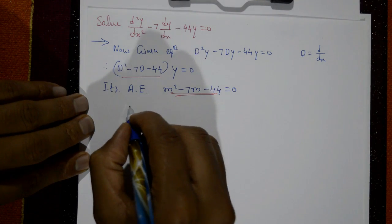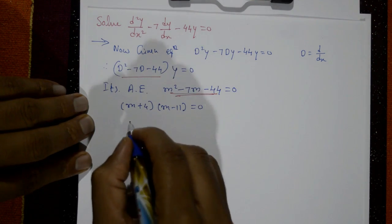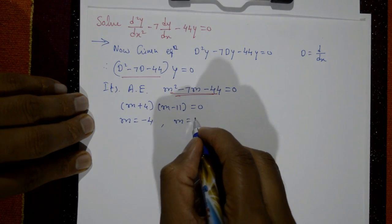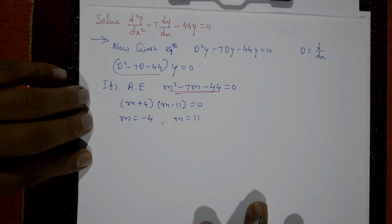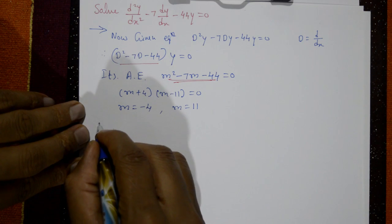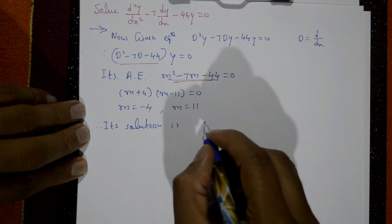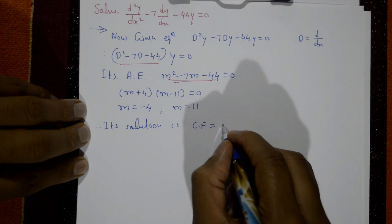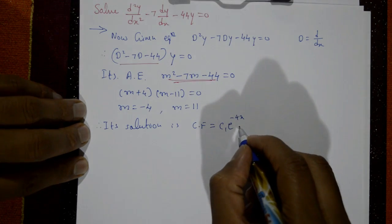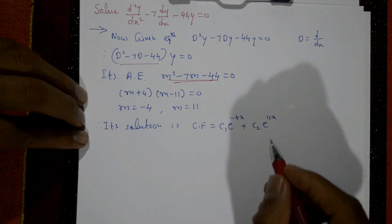By factorization, we get m plus 4 into m minus 11 equal to 0. So m1 is minus 4 and m2 is plus 11. These two roots are different. Therefore, the complementary function is c1·e^(−4x) plus c2·e^(11x). This is the required solution.